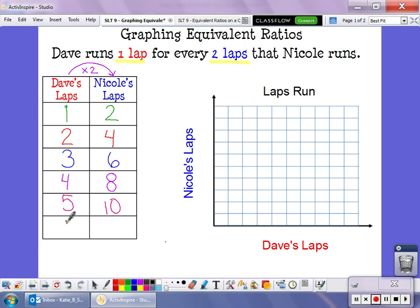And finally, if Dave runs six laps, we know Nicole has run twelve because six times two is twelve. Now, we've done ratio tables before. What's different about today is we're going to use this ratio table to help us create a graph. These combinations of numbers create an ordered pair that we can put on our graph.